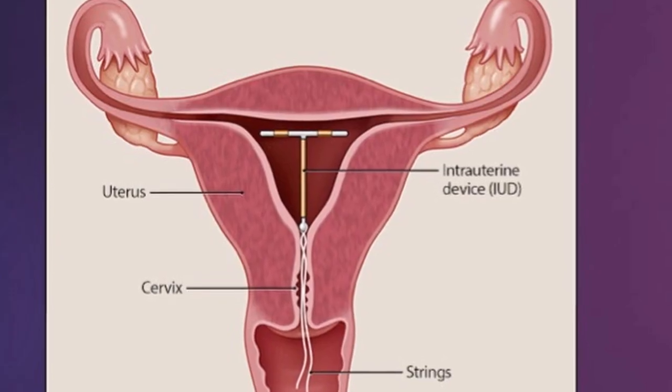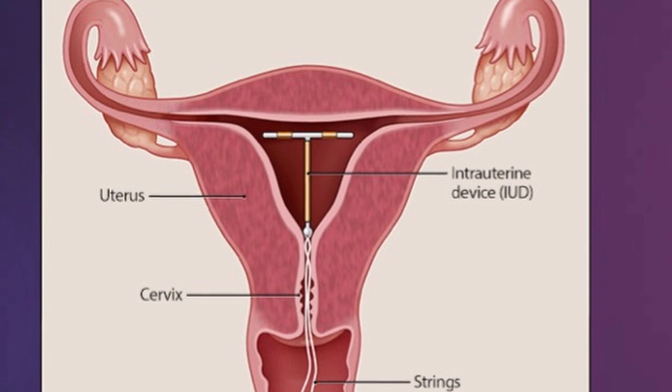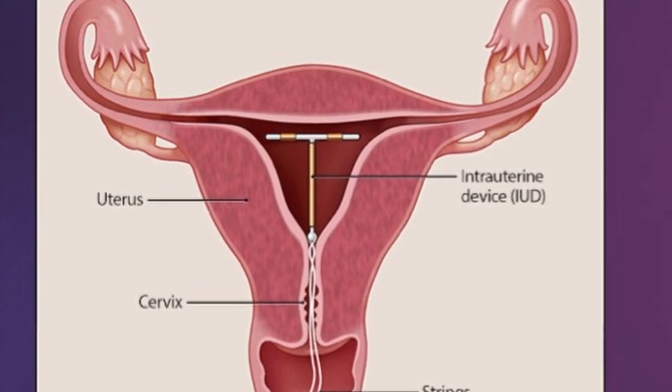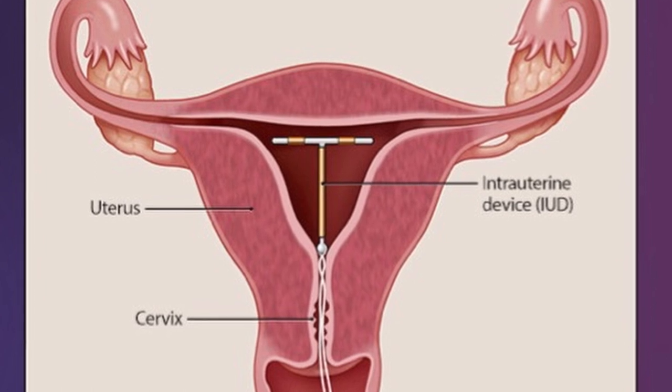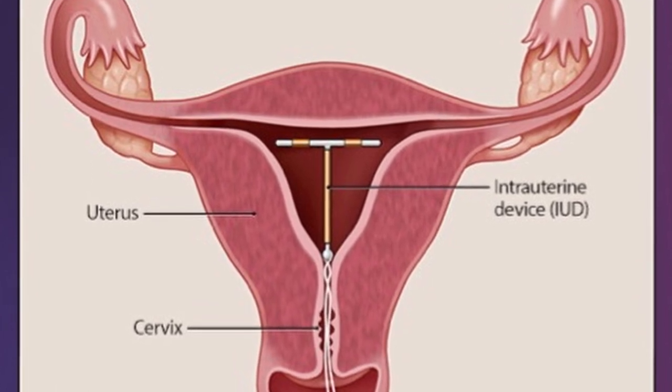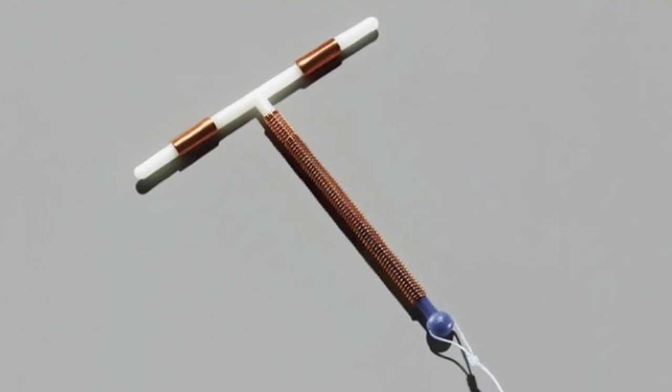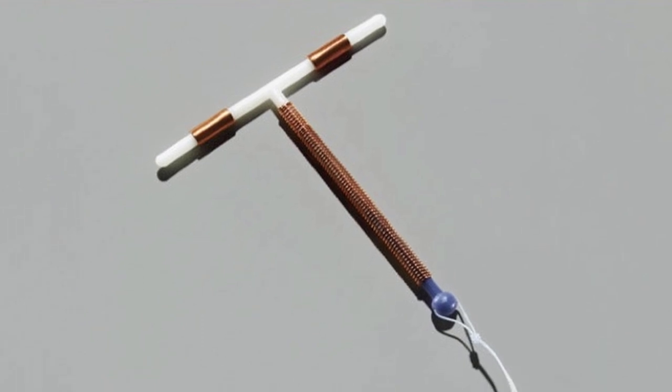For those of you who don't know, ParaGuard is an intrauterine device, an IUD, that is placed in the uterus to prevent conception. The device is composed of a polyethylene T that is wrapped in copper wire.